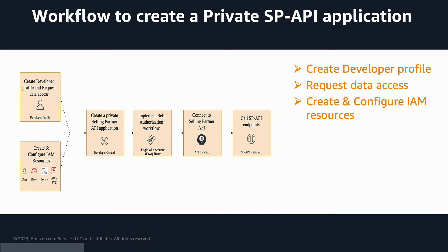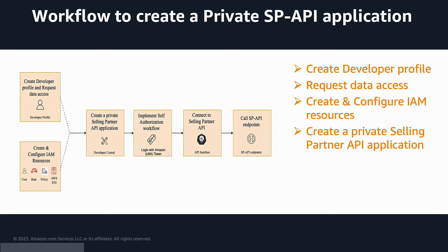Next is to create a private Selling Partner API application. In order to call the different SP API endpoints, you will need to create a private SP API application. This will give you access to client secrets that you have to use to sign your API requests. You can achieve this by adding a new client on the developer central page with all the required roles. This will create a draft Selling Partner API application. We will see this in detail in the upcoming videos.